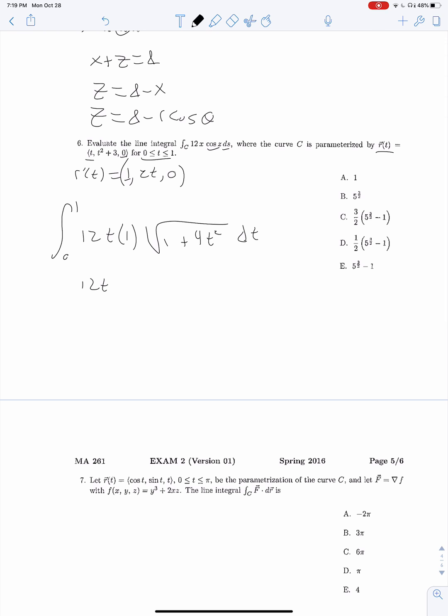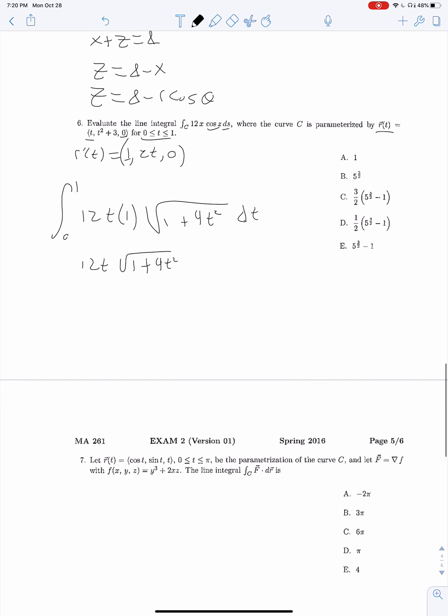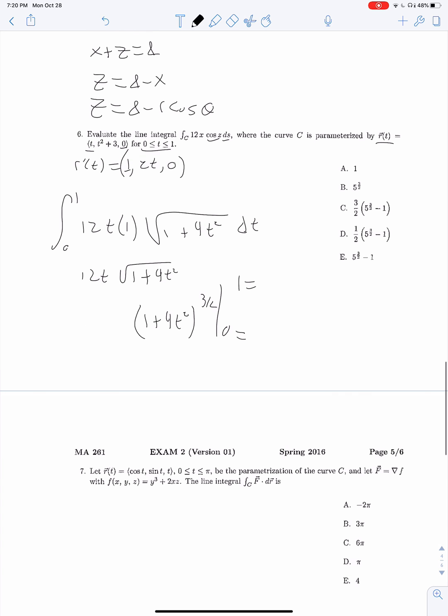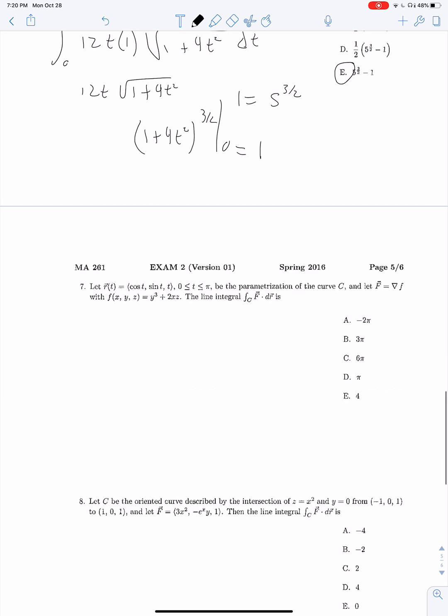Simplifying, we have 12t root 1 plus 4t squared, which we can integrate pretty quickly. 12 over 8 times 2 over 3, 1 plus 4t squared to the 3 halves evaluated on 0 to 1. This simplifies down to 1. Subbing in 1, we get 5 to the 3 halves, and subbing in 0, we get 1. So 5 to the 3 halves minus 1 is our answer.